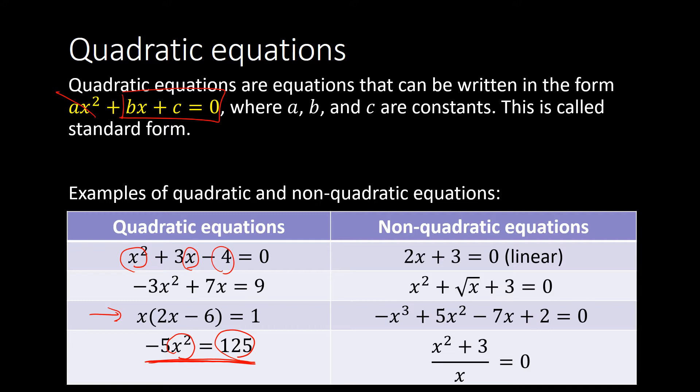Looking at our non-quadratic equations on the right: the first one is linear with no x squared term. The others all have something a little bit funny about them. The second one has a square root of x — we only want powers of 2 and 1. Another has x to the power of 3, a cubed term, which we don't want. And the bottom one is divided by x, which we also don't want.